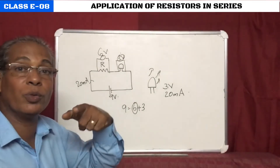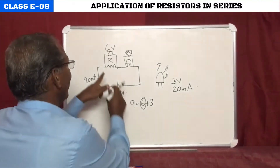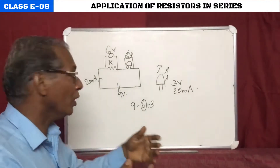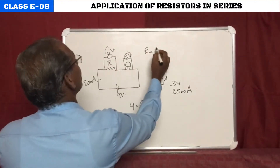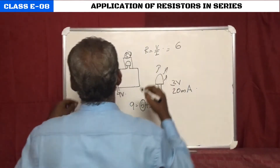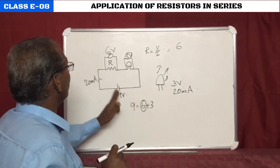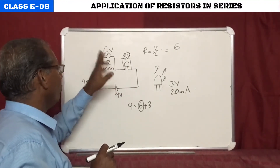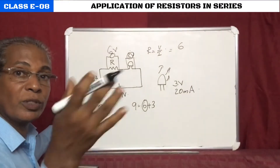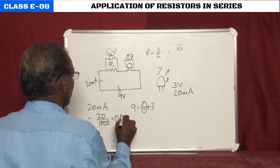Now we can make the LED glow — but what value of resistance do we need? We calculate it easily from theory: R = V/I. The voltage across the resistance is 6 volts. In a series connection, the current throughout the circuit is the same — 20 milliamperes. Before substituting, we convert 20 milliamperes to amperes: 20 ÷ 1000 = 0.02 amperes.